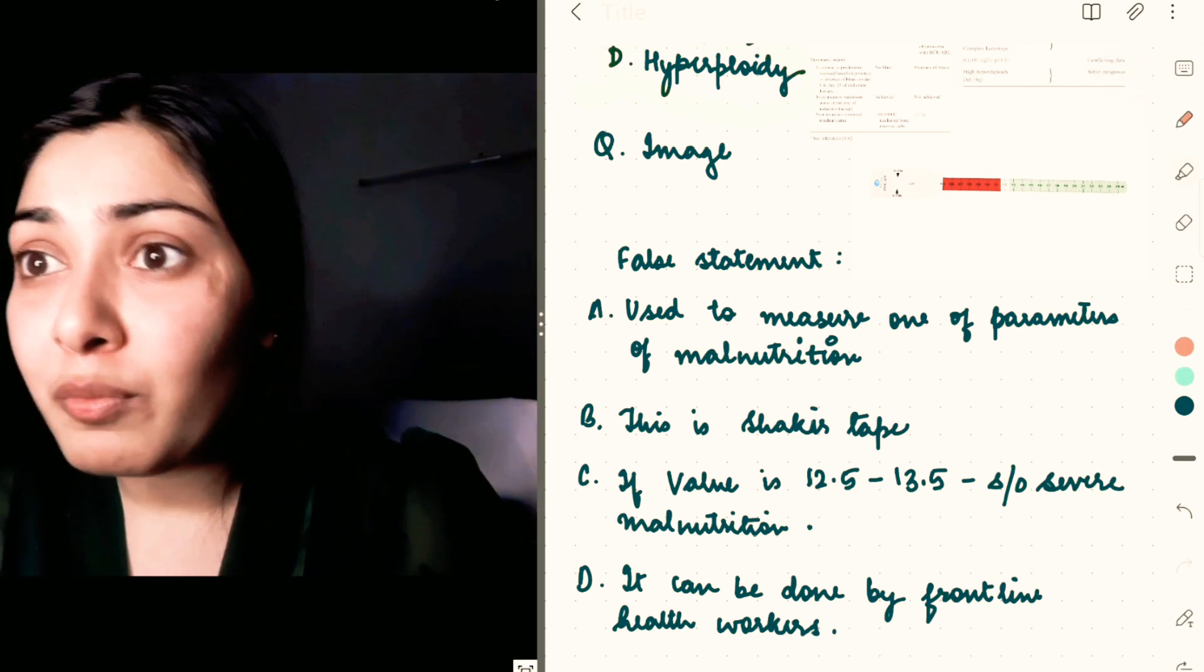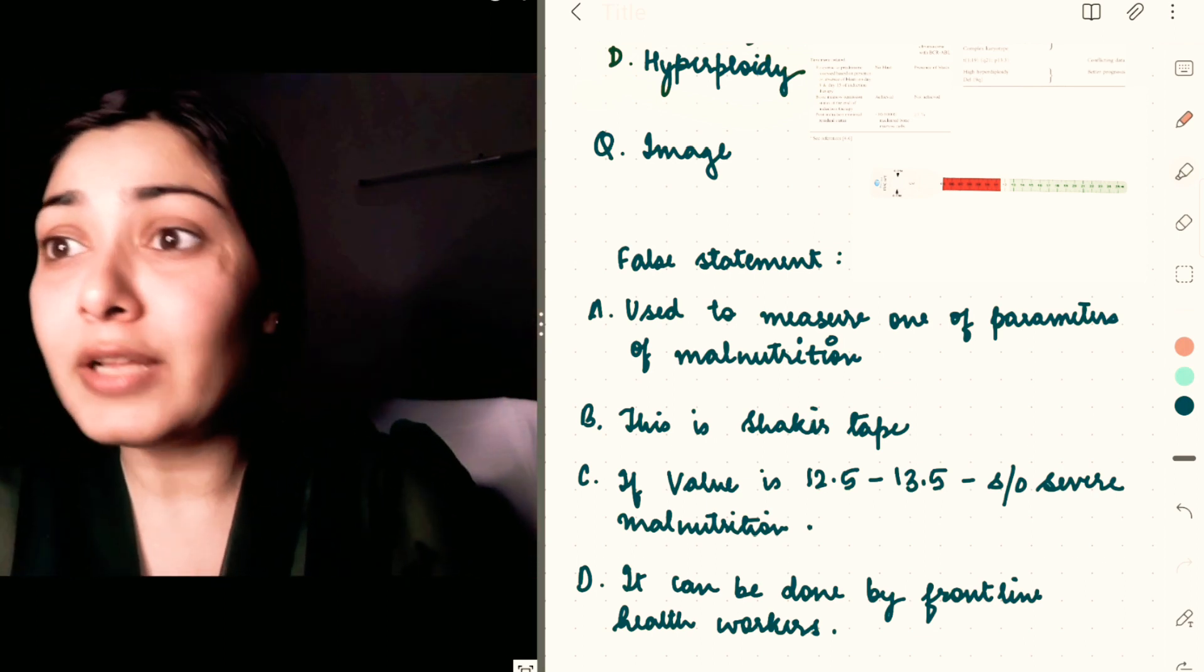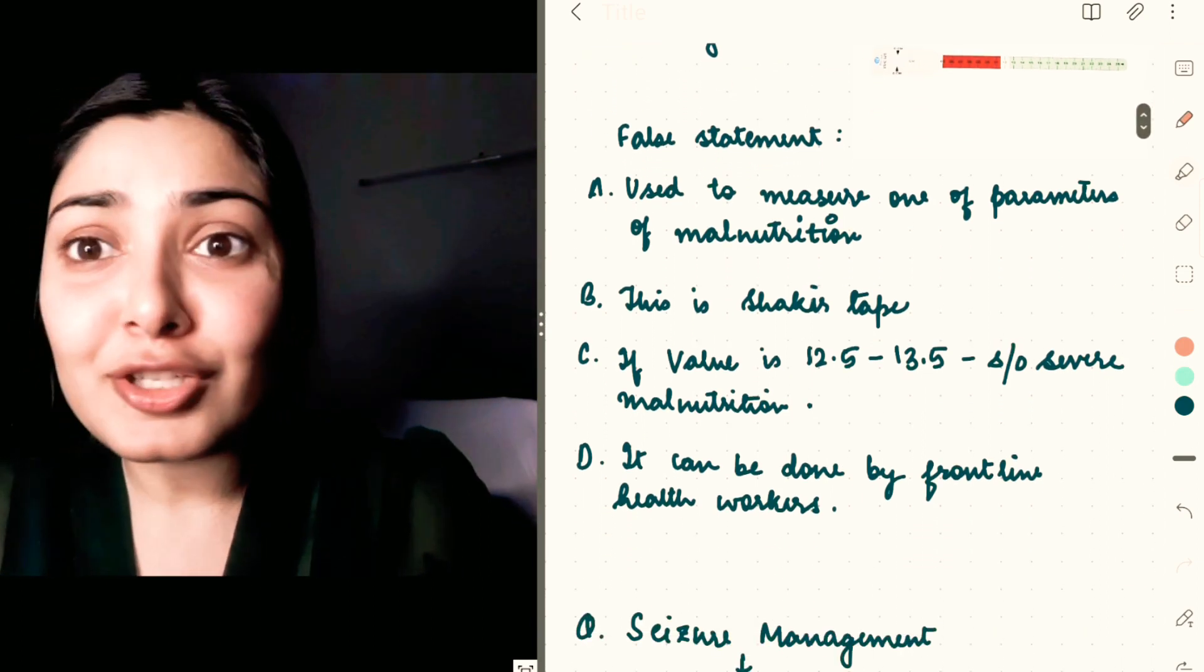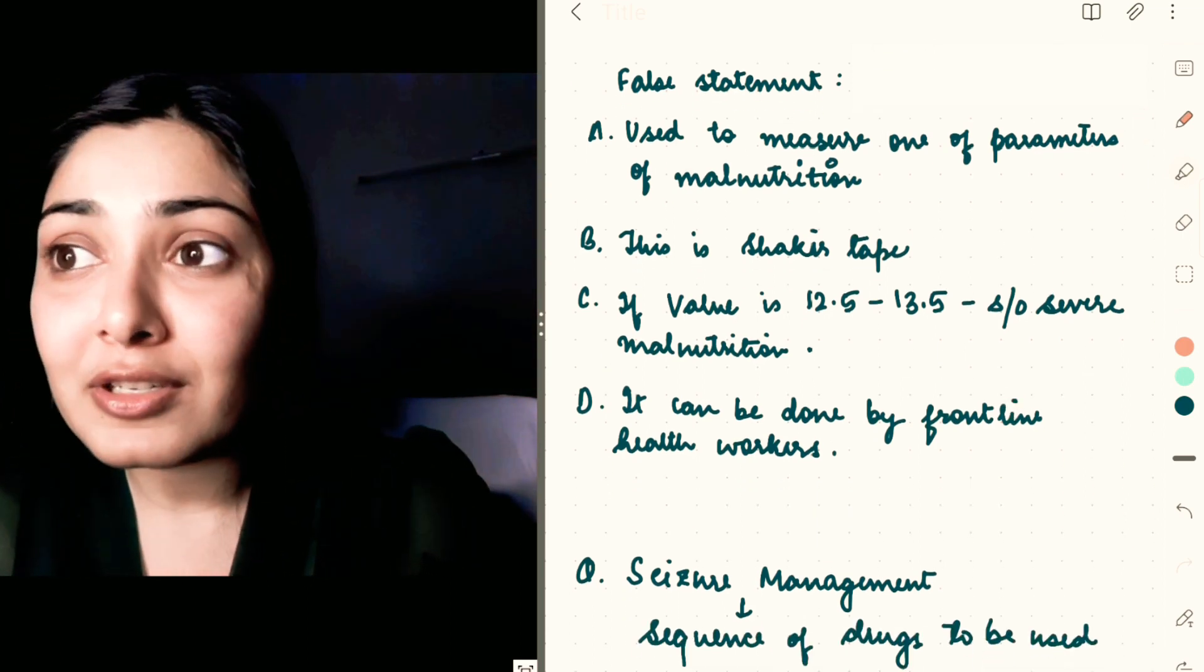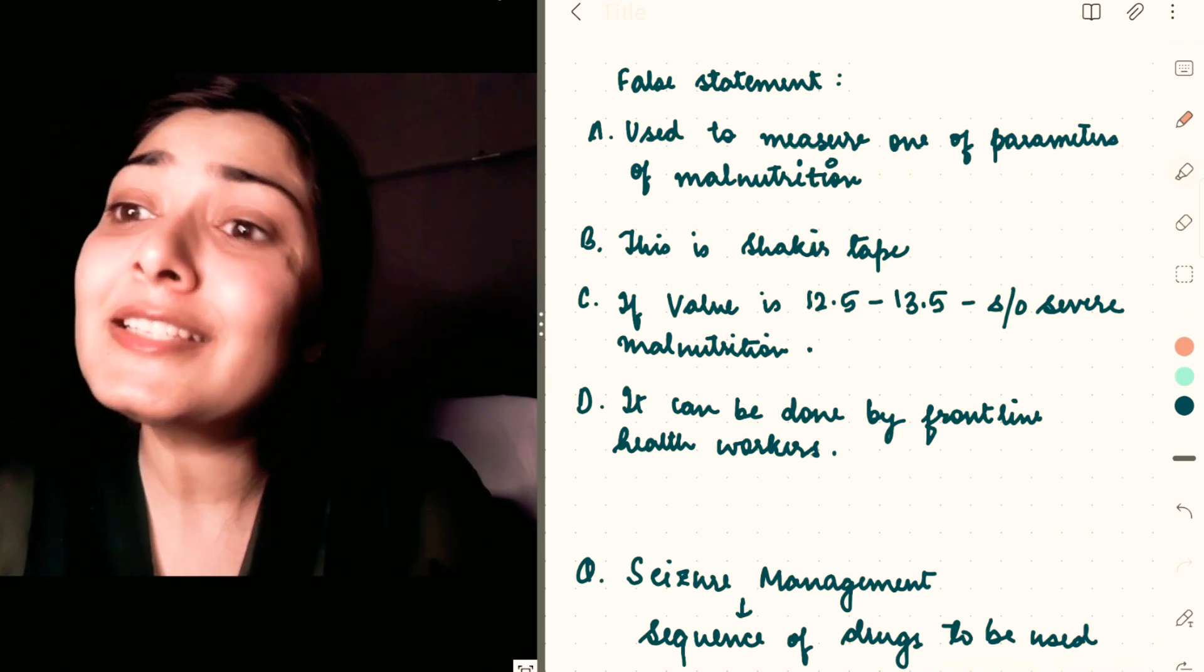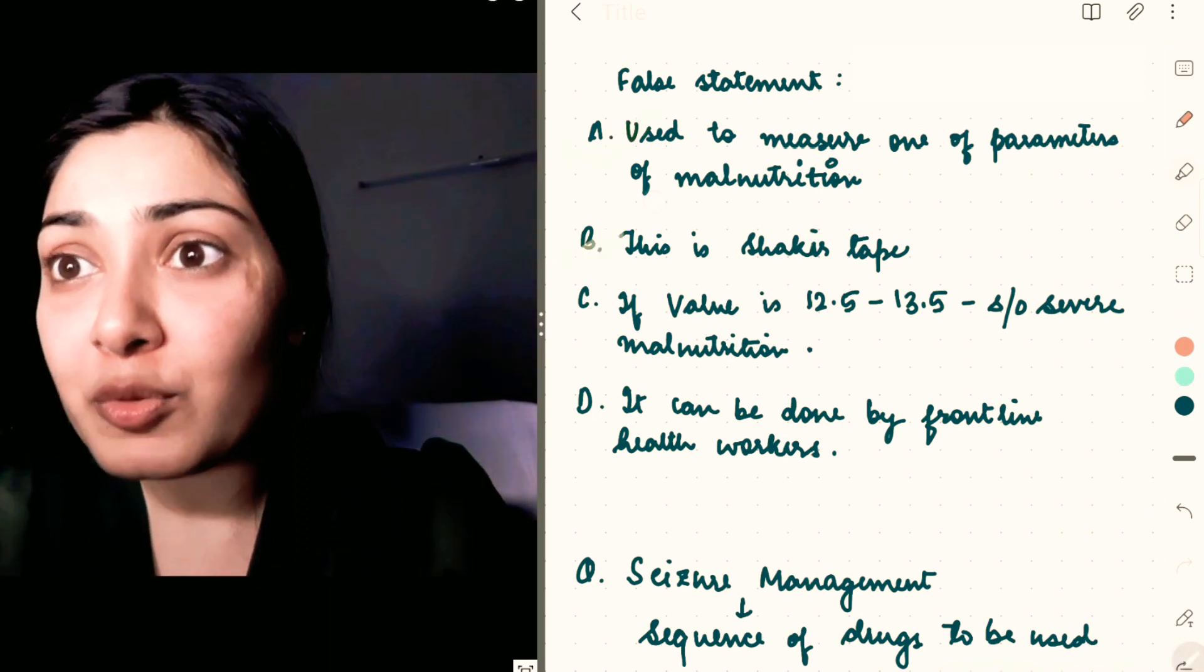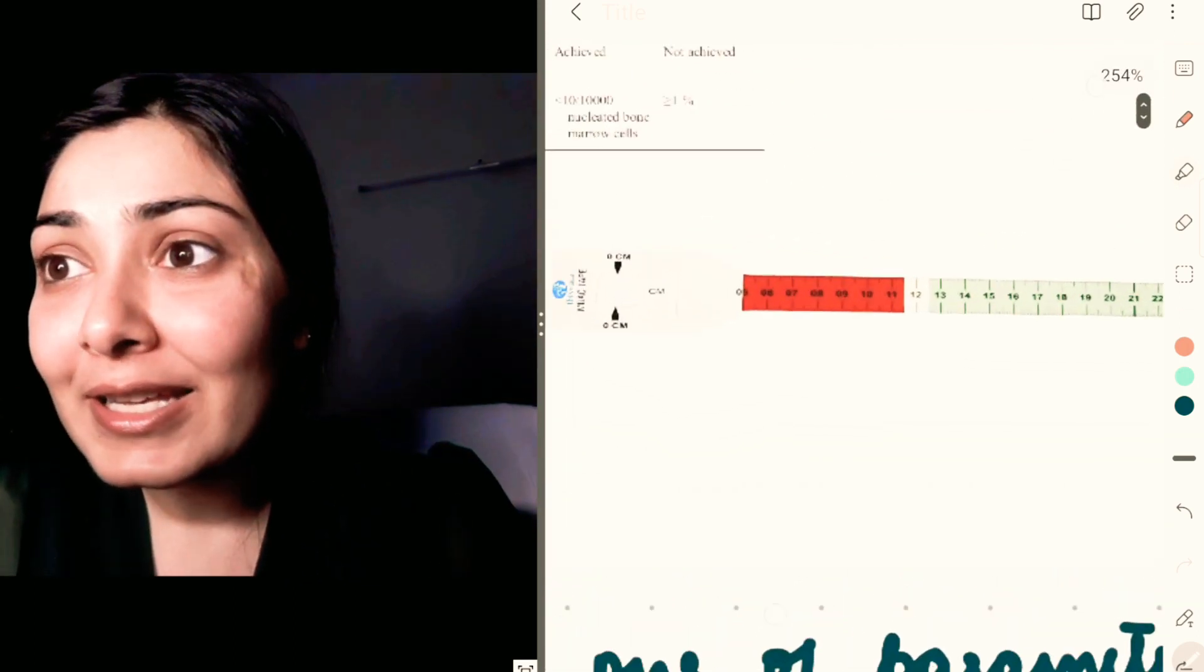A: Used to measure one of the parameters of malnutrition, which is true—it's used to measure mid-upper arm circumference. B: This is a MUAC tape. C: The value between 12.5 and 13.5 centimeters is suggestive of severe malnutrition. D: It can be done by frontline workers. I think options A, B, and D are correct.